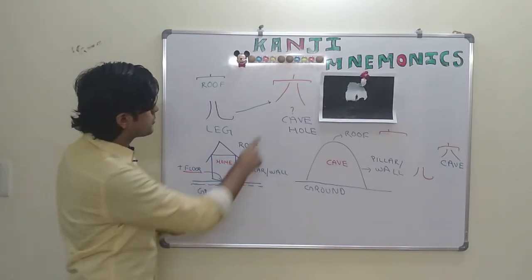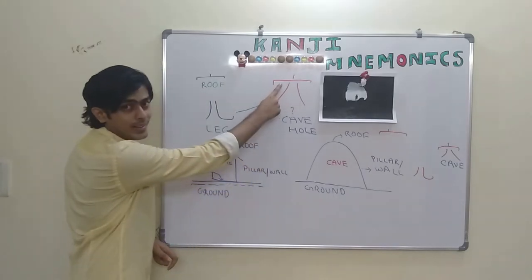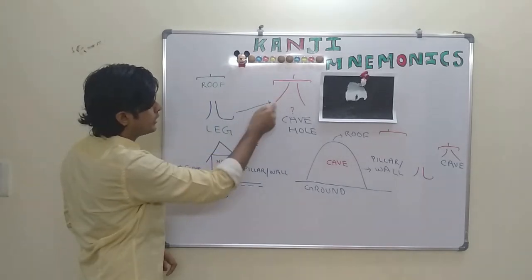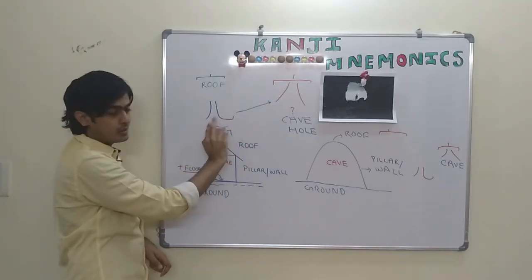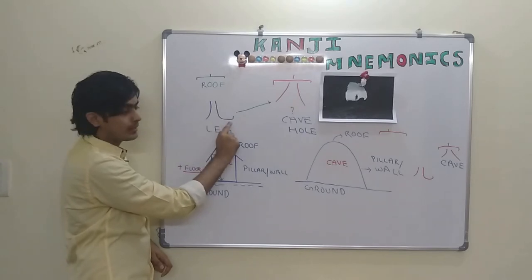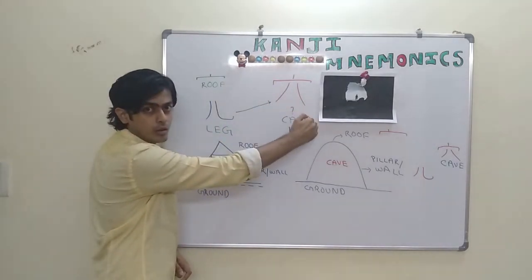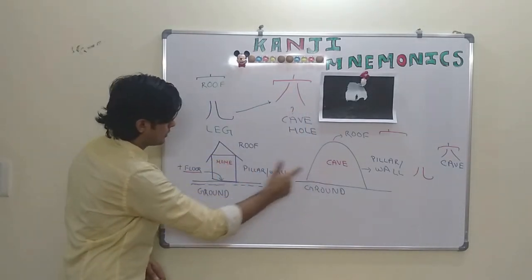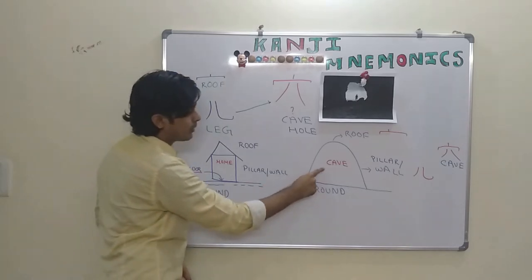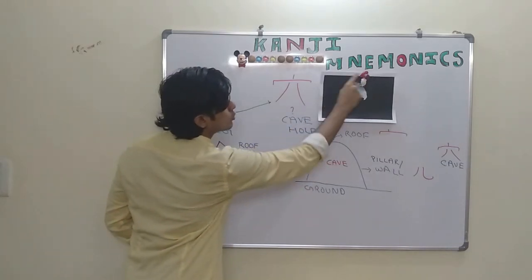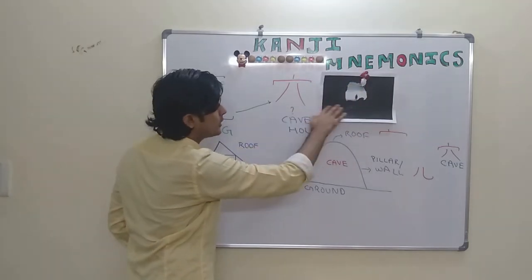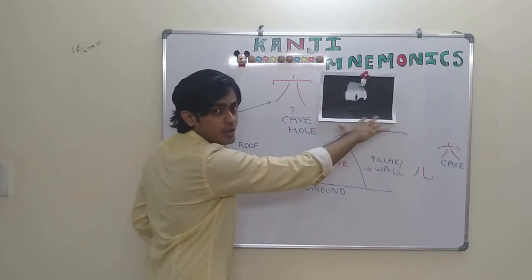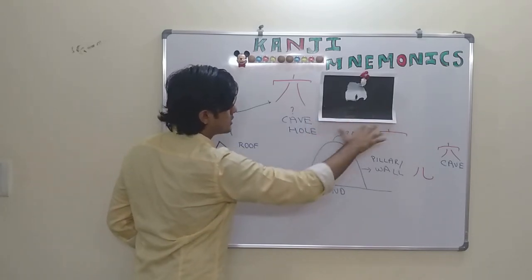And the mnemonic technique that we use is, this is the roof radical and this is the leg radical which when conjugated forms a different shape in its presentation. And in a home and a cave, there is a difference: there is no flooring. In a cave, it creates a roof portion and the pillars to support that roof but it is naturally on the ground, there is no flooring. However, in a home there is this flooring above the ground.